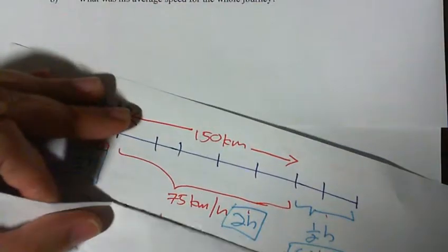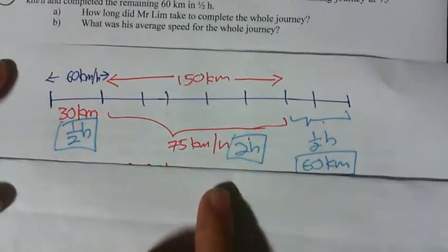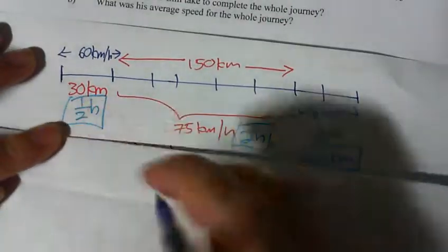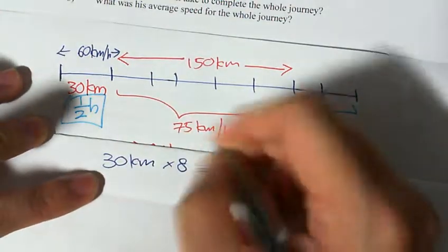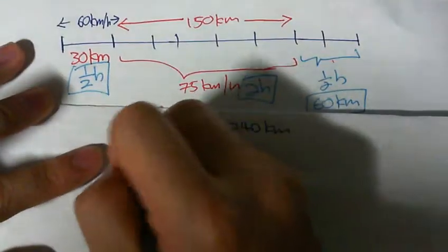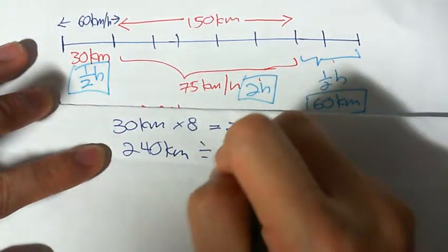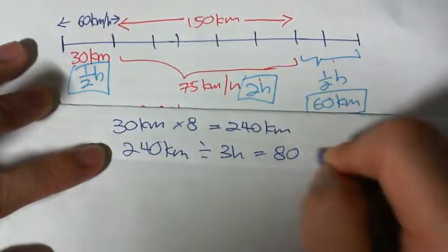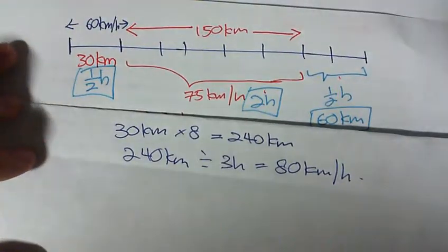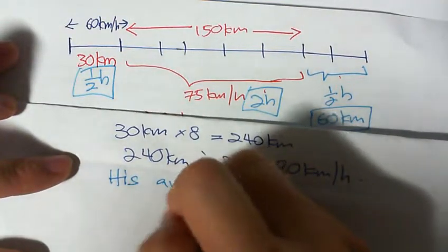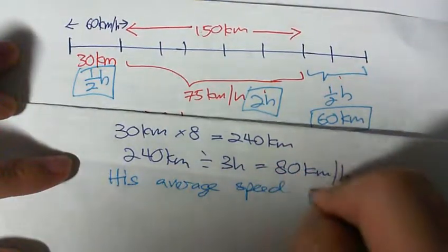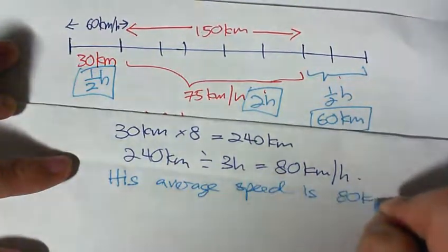If you have done the time-distance line properly, all information is right there. Total distance is 30 km times 8 units equals 240 km. He took 3 hours. Average speed equals 240 km divided by 3 hours equals 80 km/h. His average speed is 80 km per hour.